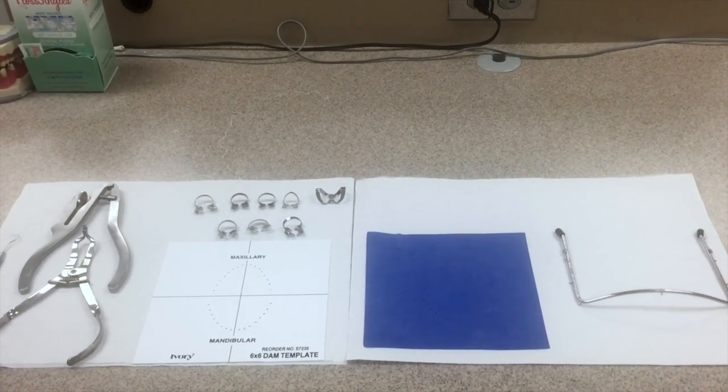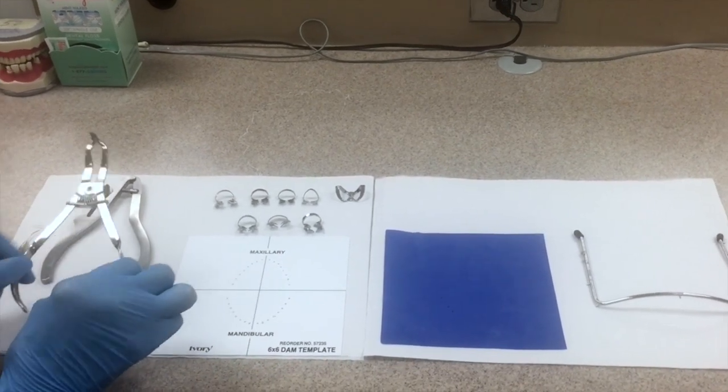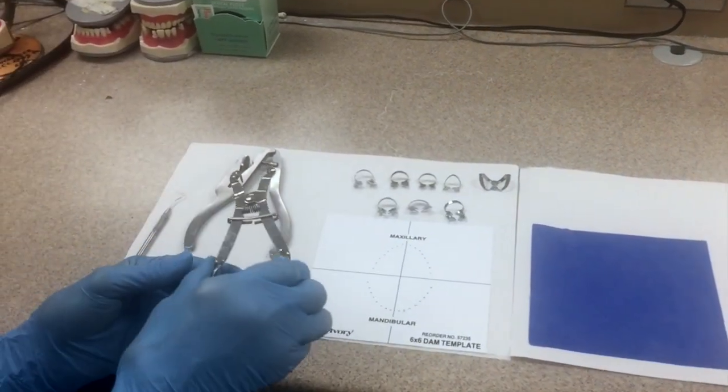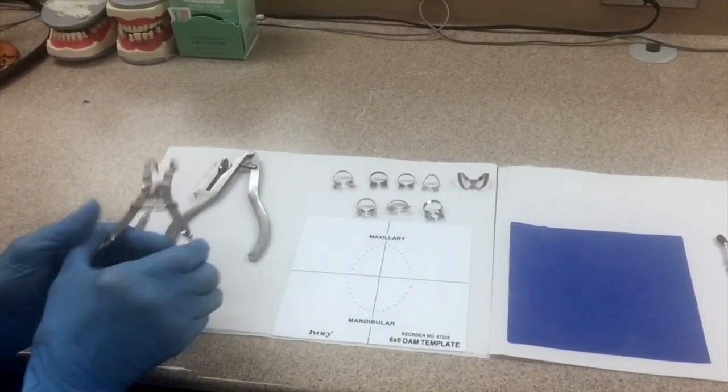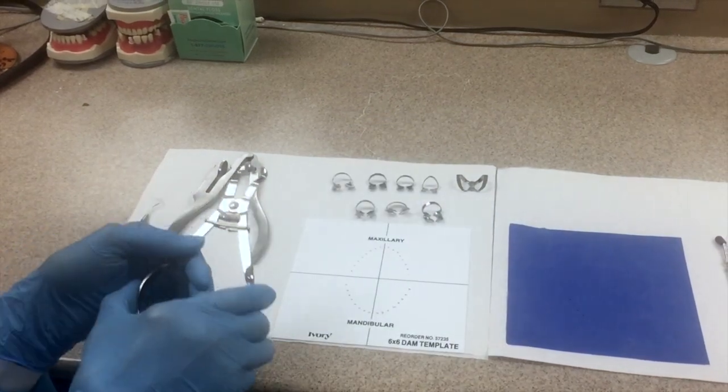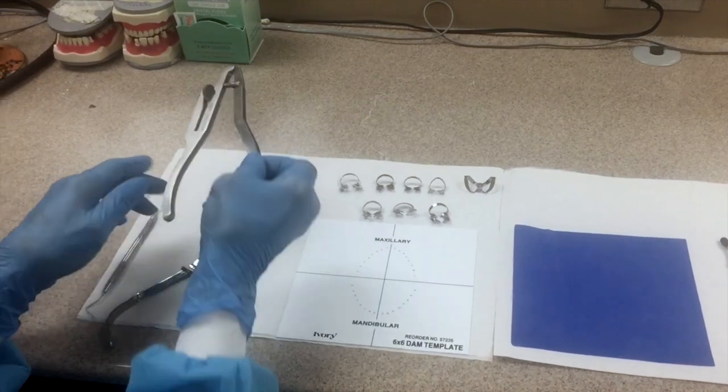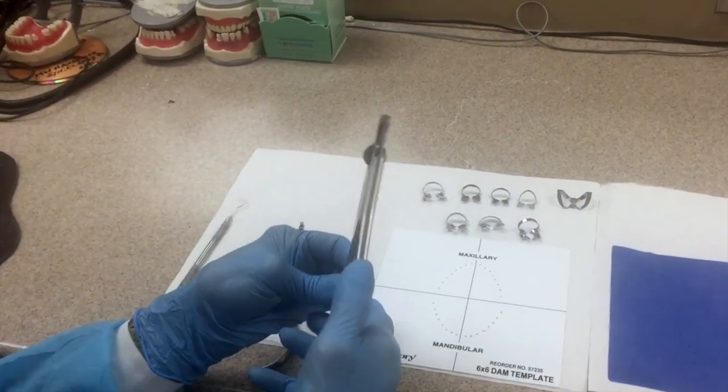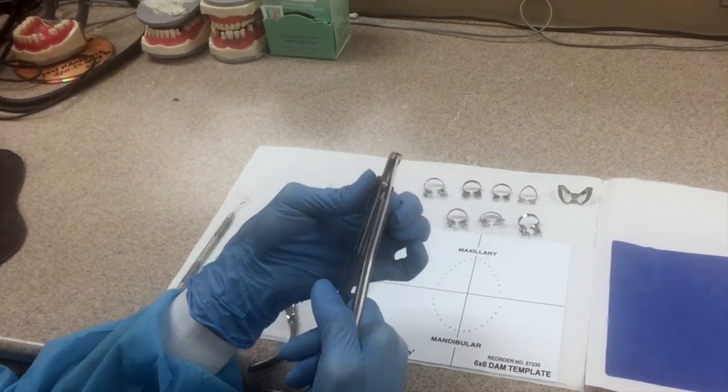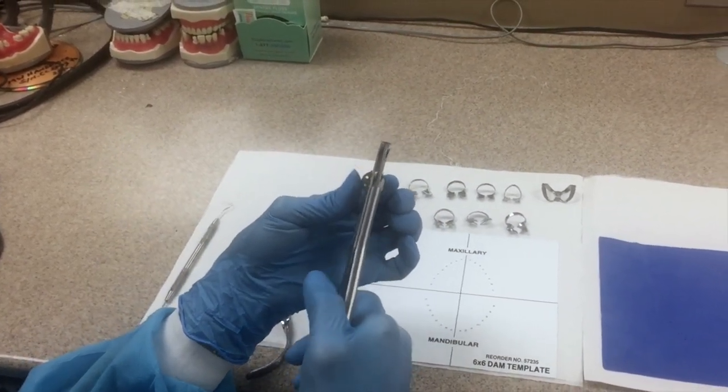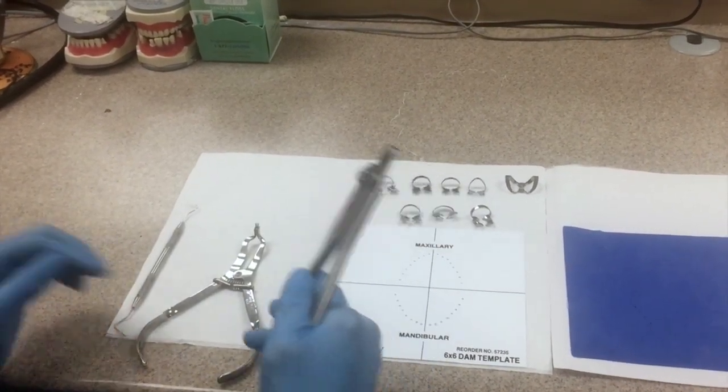First I would like to go over the components of the rubber dam system. First we have our rubber dam forceps, and these forceps are a means of transporting the retainers onto the tooth. Our next instrument is our rubber dam punch. The rubber dam punch actually punches holes in the rubber dam. Big holes for big teeth and tiny holes for little lower central incisors.